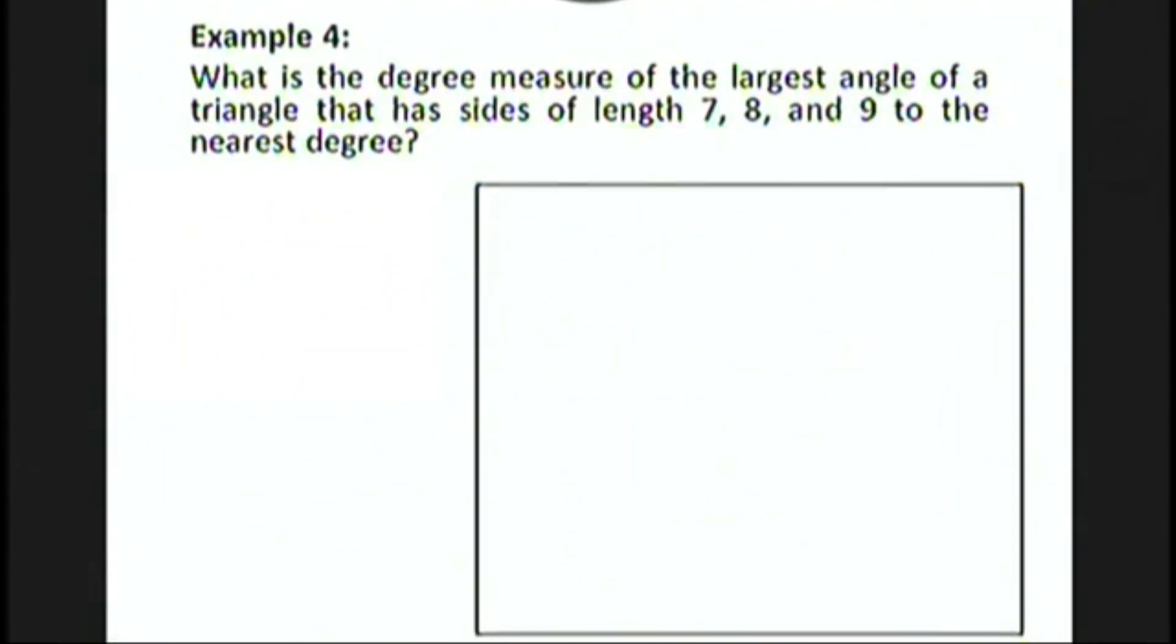Let's do one more example where we can use the law of cosines. What is the degree measure of the largest angle of a triangle that has sides of length 7, 8, and 9 to the nearest degree? Let me draw a picture of this triangle: 7, 8, 9. We want the largest angle of the triangle. The largest angle of a triangle is always opposite the largest side.